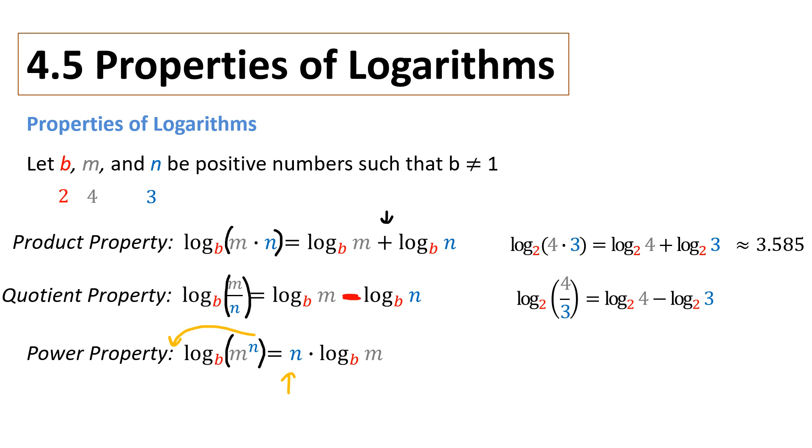You can verify the quotient property the same way. Log base 2 of 4 thirds is equal to log base 2 of 4 minus log base 2 of 3. And both of those equal approximately 0.415.